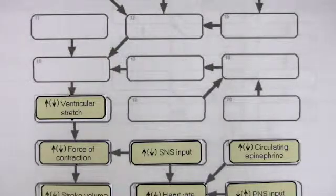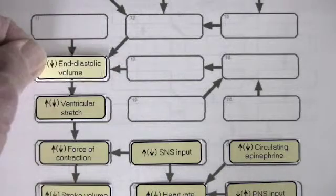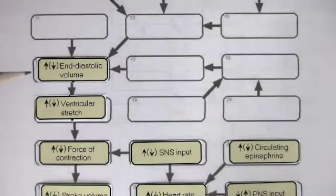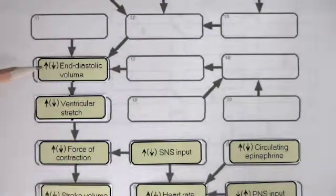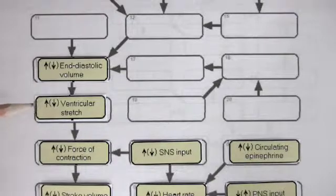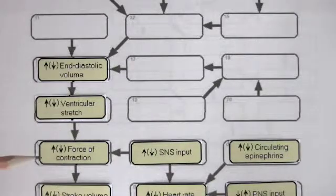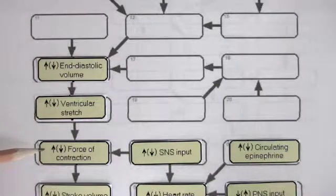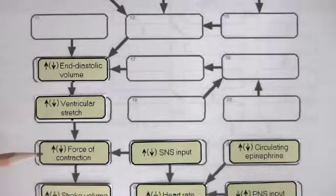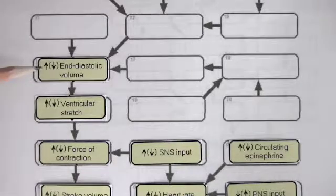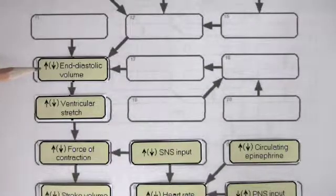Ventricular stretch is directly influenced by end diastolic volume. If you increase end diastolic volume, you increase ventricular stretch and you increase force of contraction. Remember, end diastolic volume is the volume of blood in the ventricles at the end of diastole.